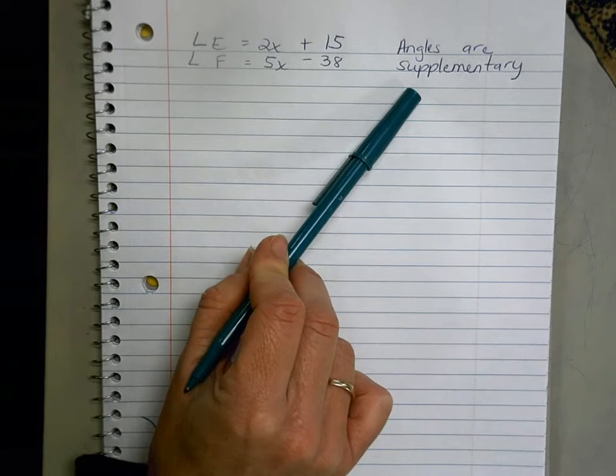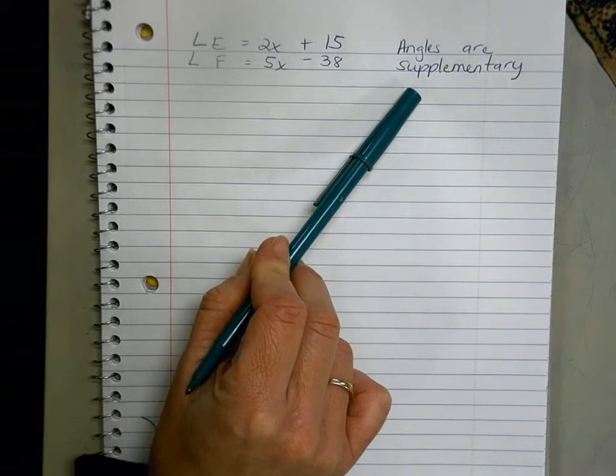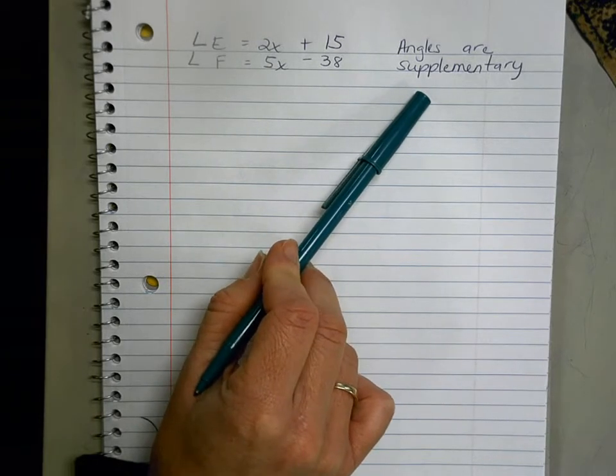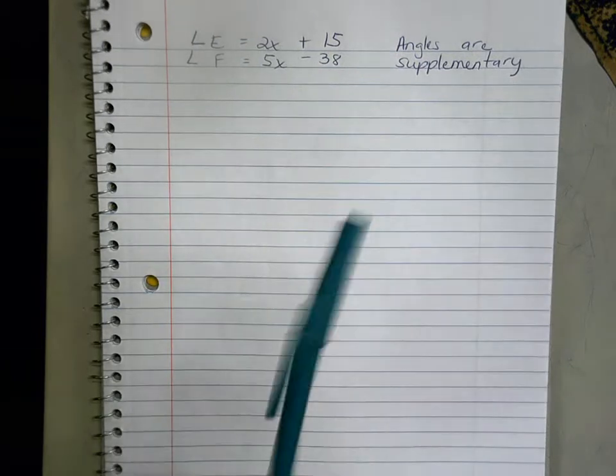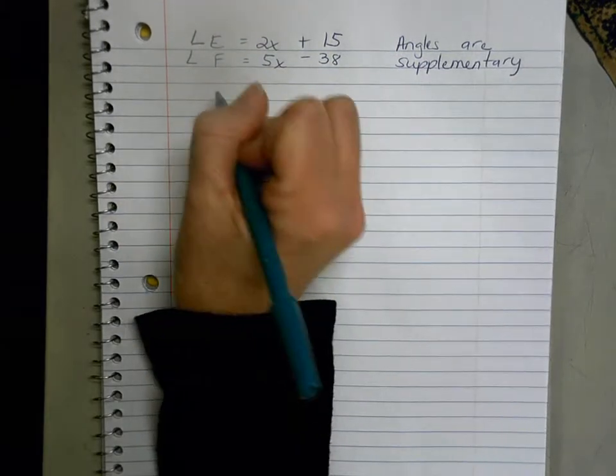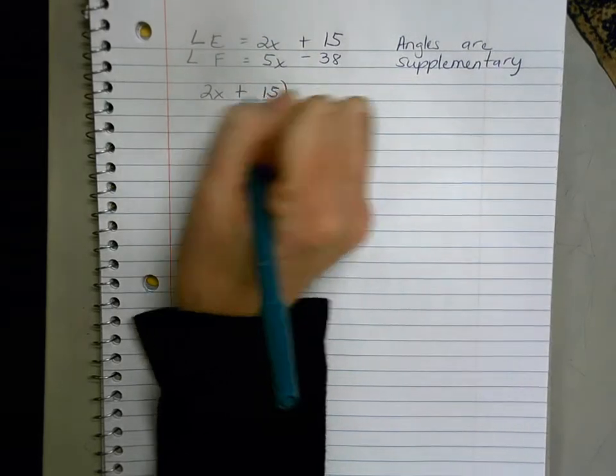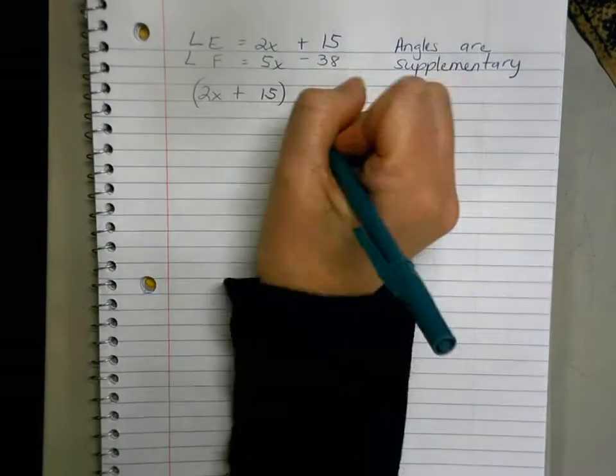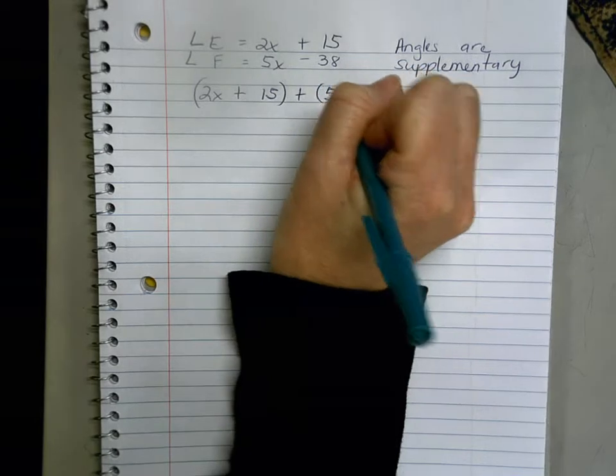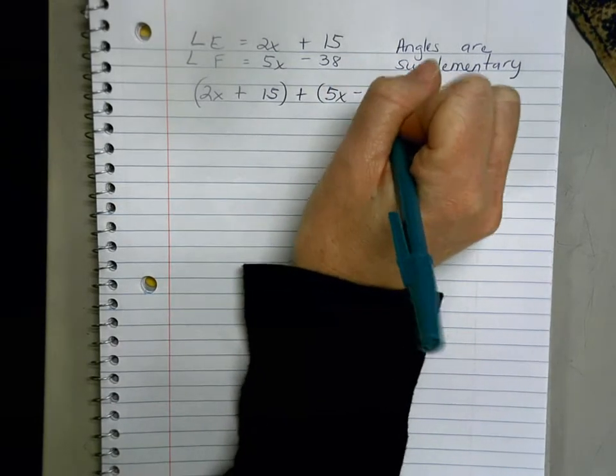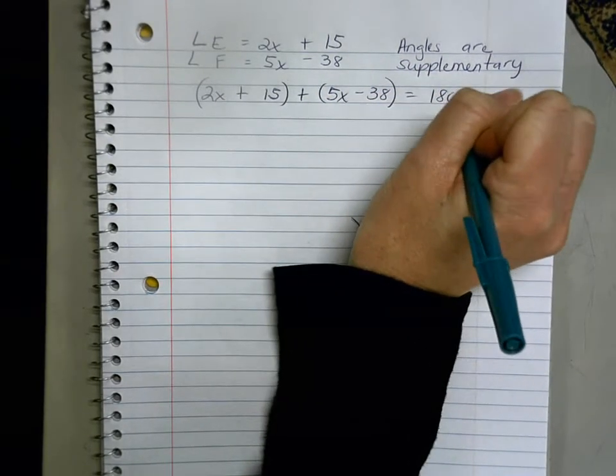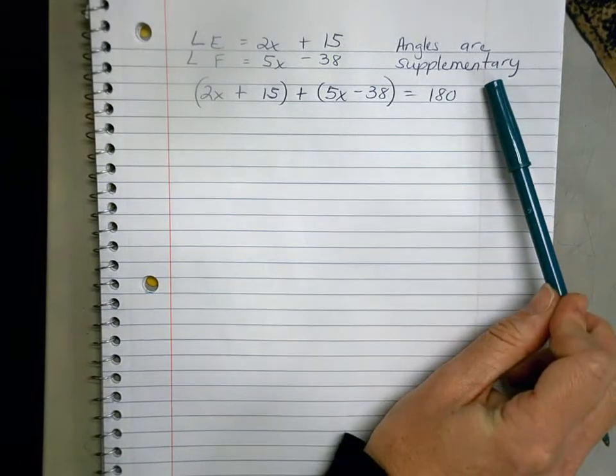Here this is example 23 from the homework tonight. I'm asking you to find angles E and F given the angles are supplementary, which means that when I add them together, angle E which is 2x plus 15 and then angle F which is 5x minus 38, I'm gonna get a sum of 180 degrees. That's what supplementary angles are.